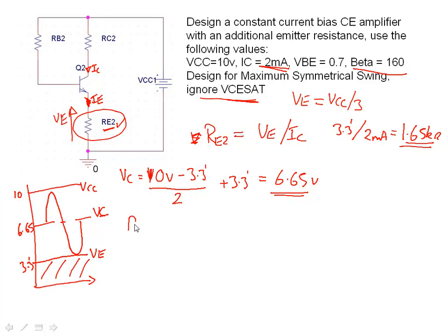So if the collector sat at this value, let's put a little label on there 6.65, we can now write our expression for RC. Our collector resistance is equal to the supply voltage VCC minus VC the absolute voltage divided by IC. So let's put some numbers in: 10 minus 6.65 all divided by 2 times 10 to minus 3. We do that, we end up with 1.675 kilo ohms.